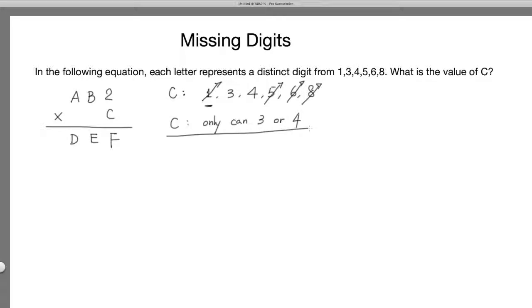So C can only possibly be 3 or 4. That is a key limitation on C. And from there, let's do a little bit of trial and error to figure out the rest of the problem. So let's think about C equals 4. When C equals 4, of course, 2 times 4 equals 8, so F has to be 8. So we have reduced the problem to AB2 times 4 equals DE8.